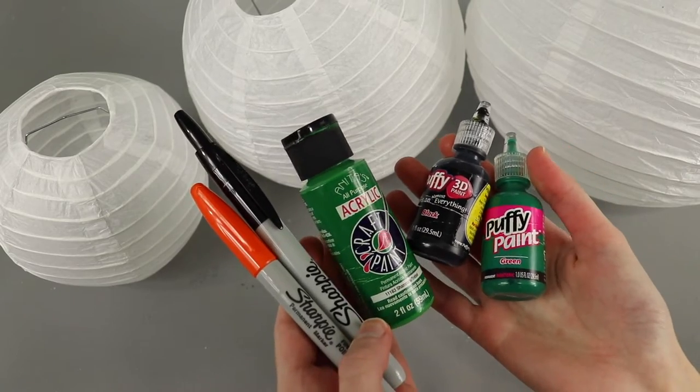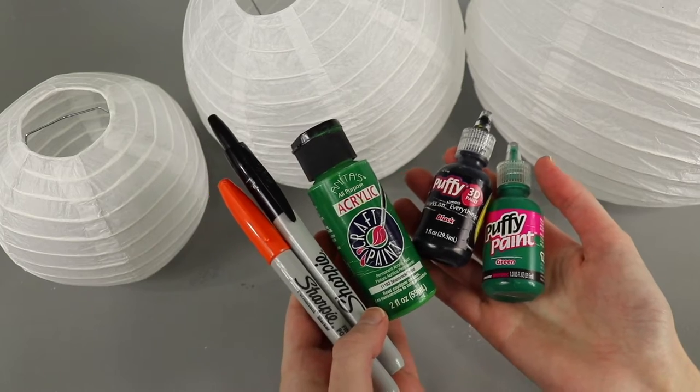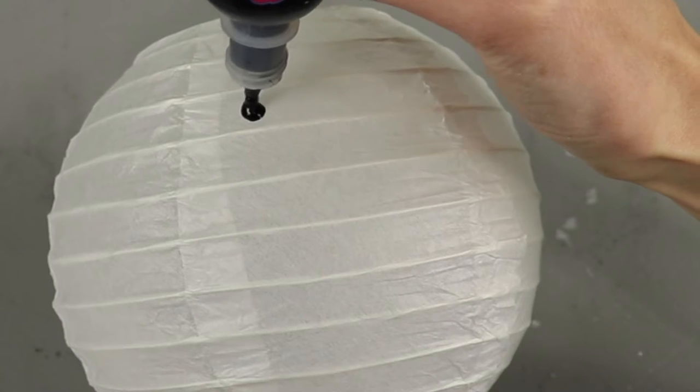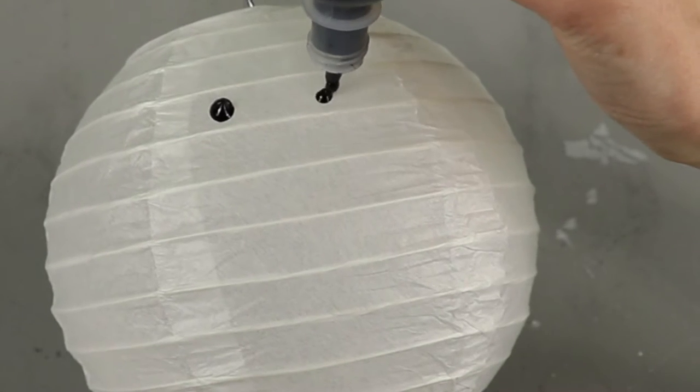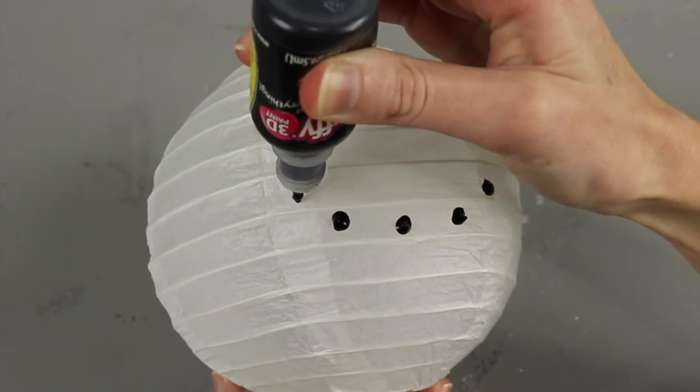Next it's time to decorate our snowman. There's so many ways to do this including paint and markers, but I'm going to use puffy paint because I like the texture that it adds. The important thing when decorating your snowman is to figure out how the lanterns will line up when they are hanging from each other. You don't want to put the face on one side and the buttons on a different side.